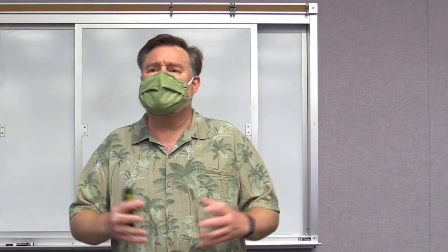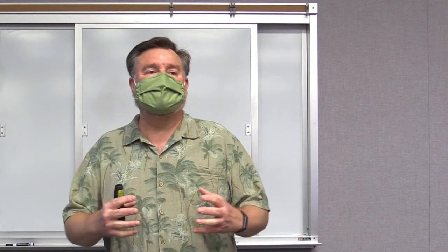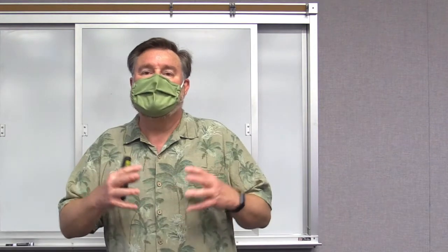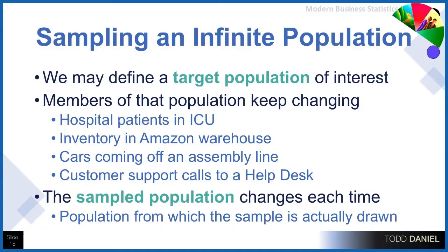If we want to know something about this population of cars and their gas mileage, we can still sample this population, but it's an infinite population, so we hopefully will be able to tell not only about the cars that have already been created on the assembly line, but the ones we're going to make next week, next month, or even next year. The customer support calls to a help desk — the sampled population changes each time. That's what makes this an infinite population.